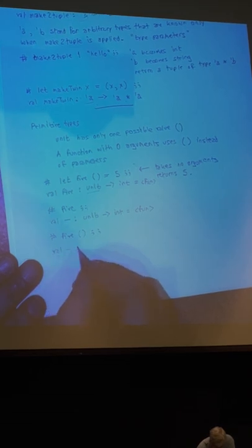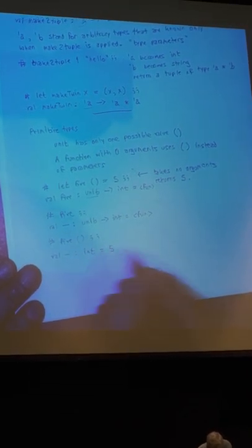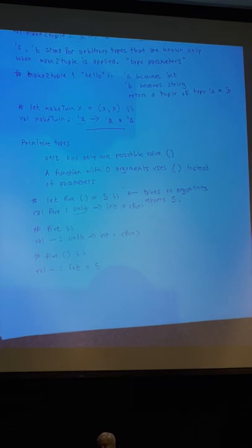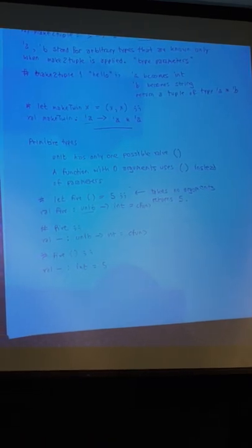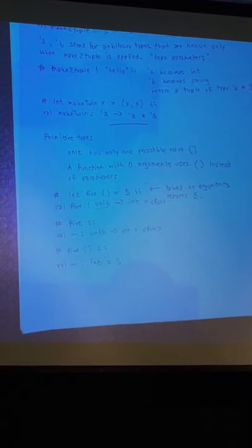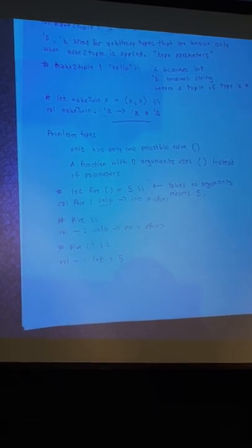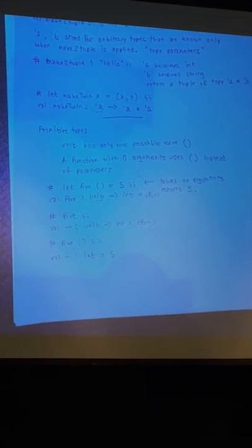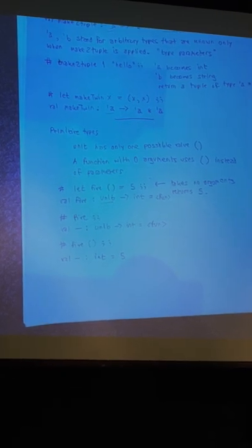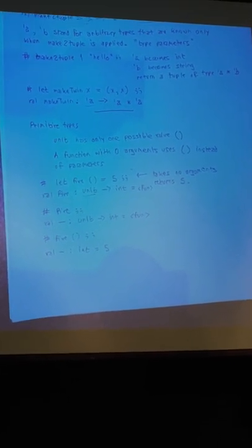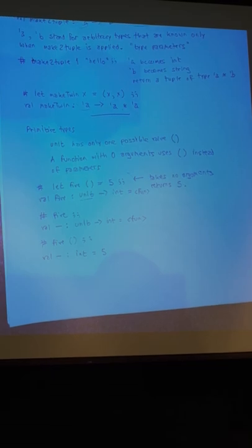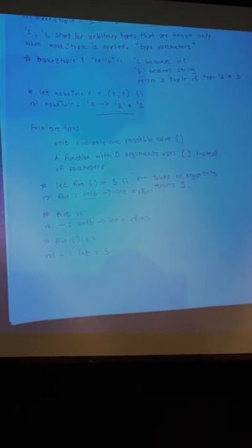The notation for unit as two parentheses exists because the designers of OCaml wanted to suggest an empty argument list, like you'd see in Java when calling a method with no arguments. I wish they hadn't done that because it always looks to me like it should be a tuple with zero elements, and there is no such thing.